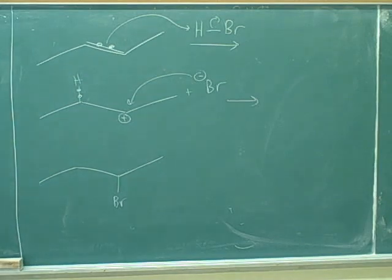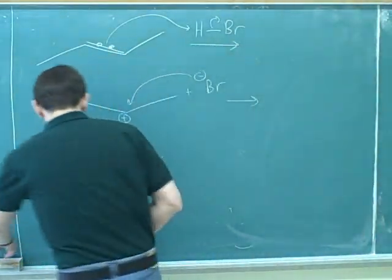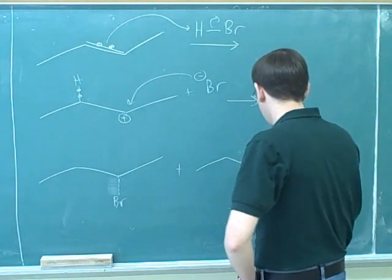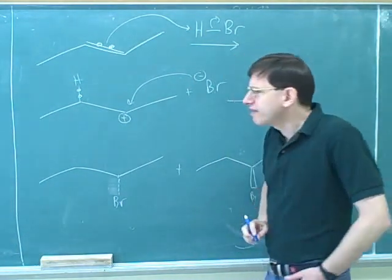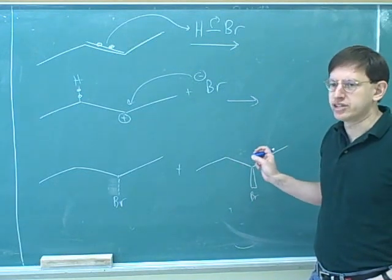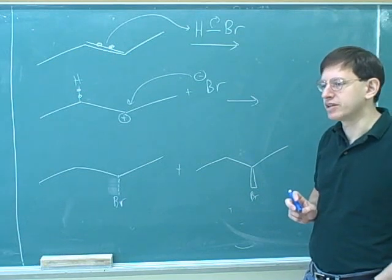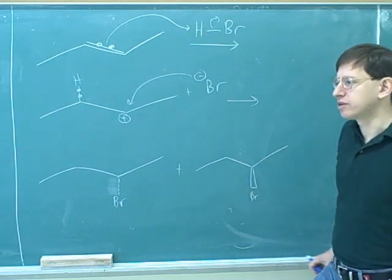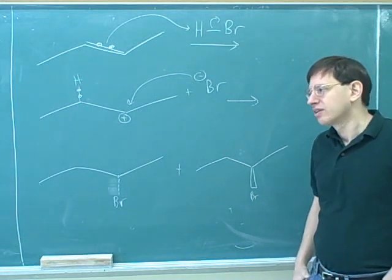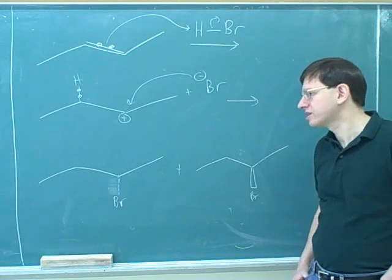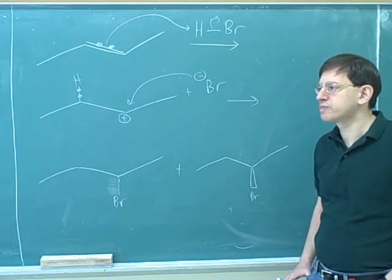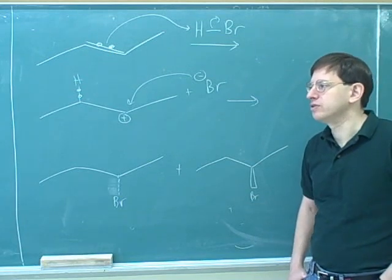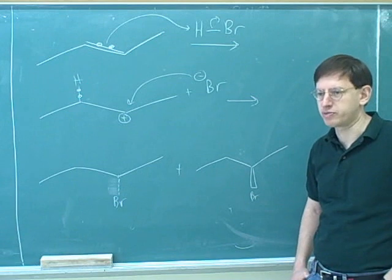This is not a minor technicality — this is one of the main issues that the course is trying to teach you at this point, so it's very important to always think about stereochemistry. Every time a stereocenter is formed, you must use wedges and dashes to show the geometry. And then you have to decide whether you're forming one product or two. Sometimes you're only forming one product, so you don't need an enantiomer; sometimes you're forming two products. But whether you're forming one product or two, you have to show which product it is by putting in the wedges and the dashes.